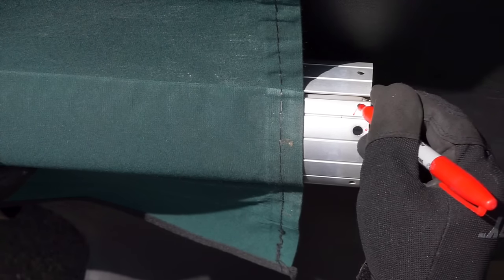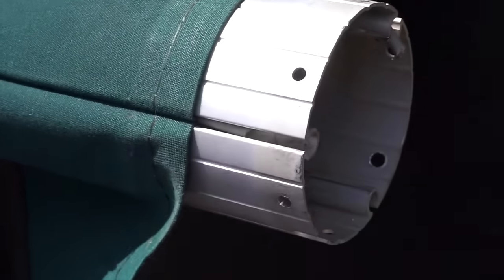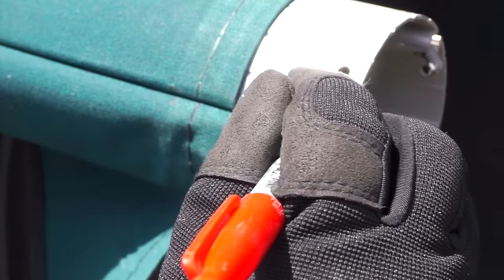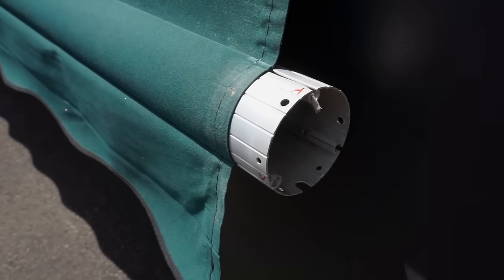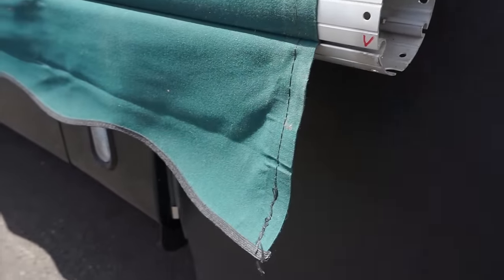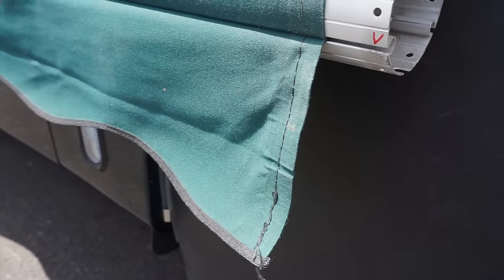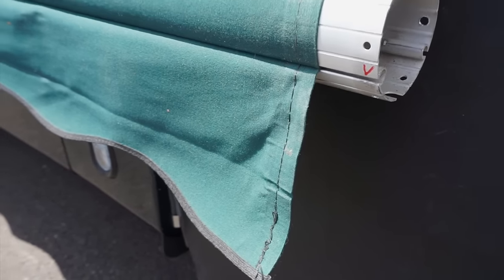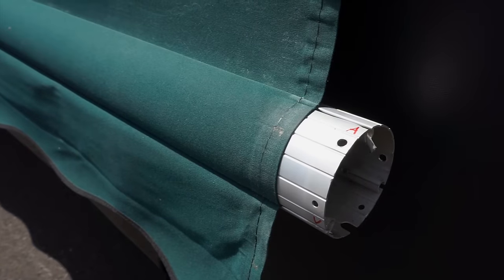Make two more marks on the end of the tube, A for awning and V for valance. That way you'll know which track is for the awning and which is for the decorative valance, making reassembly a snap. The marks will be covered by the end caps when you're done so they won't be visible.